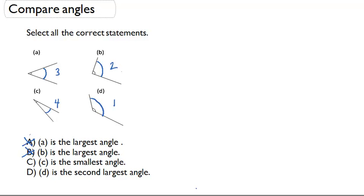Part C, C is the smallest angle. If I take a look, we put a 4 next to C, which we used to show that it was the fourth largest or the smallest angle. So C looks like it is going to be correct. I'm going to circle C.